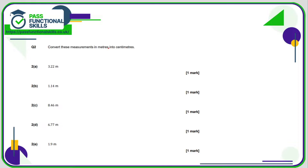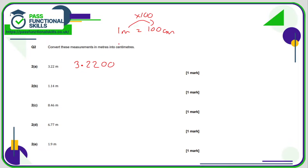Now convert these metres into centimetres. One metre equals 100 centimetres, so to convert metres into centimetres we're multiplying by 100, which is a bit easier than dividing. So 3.22 metres — I'll put some zeros on the end so I can move the decimal point more easily. We move the decimal point two positions to the right because we want to make the number bigger. So the decimal point will sit here: 322.00, otherwise known as 322 centimetres.